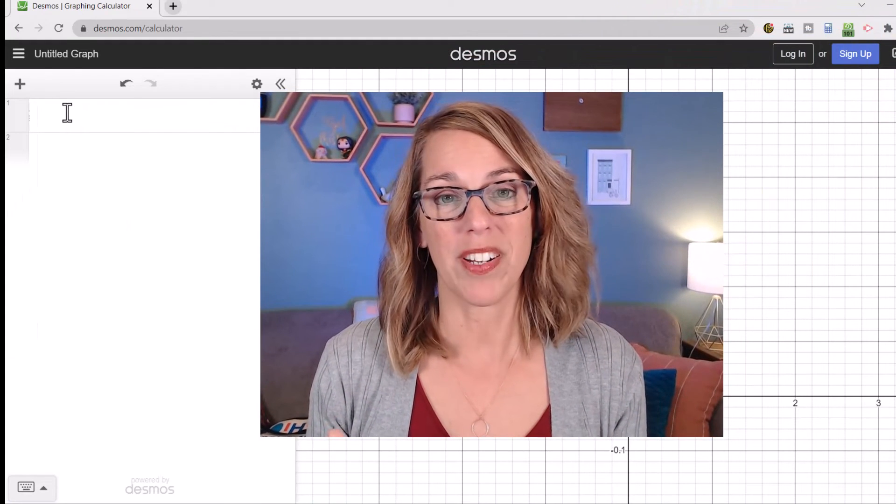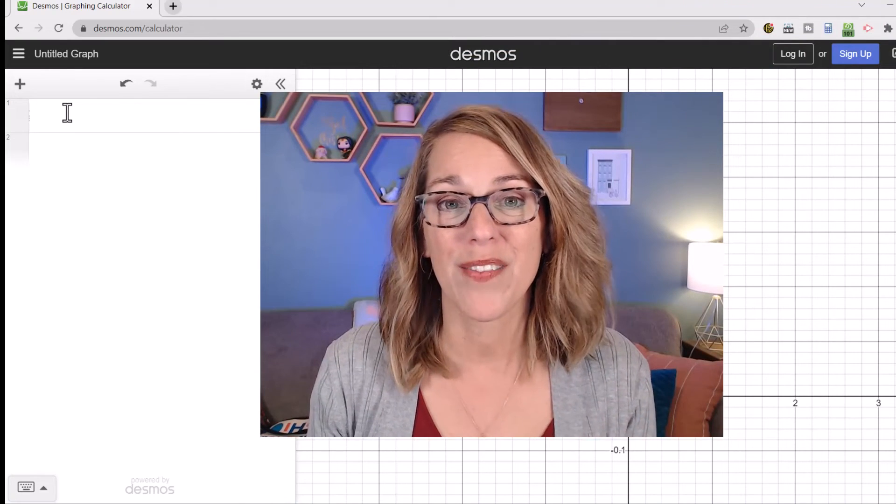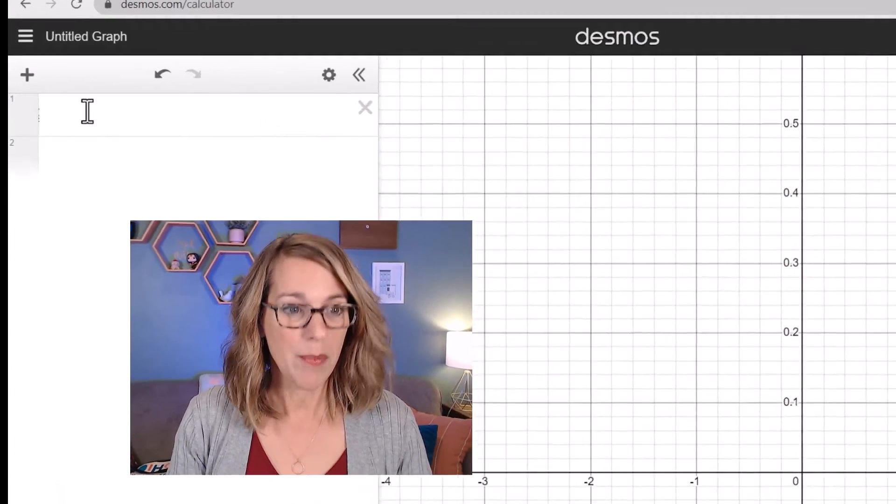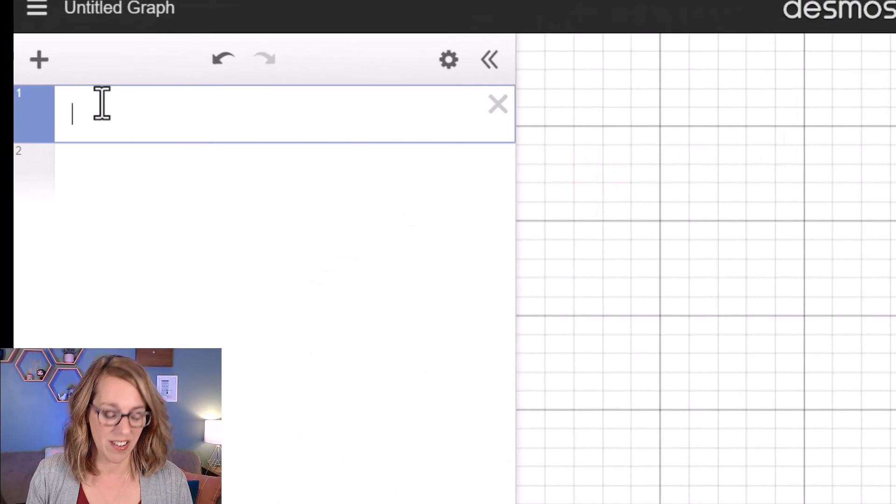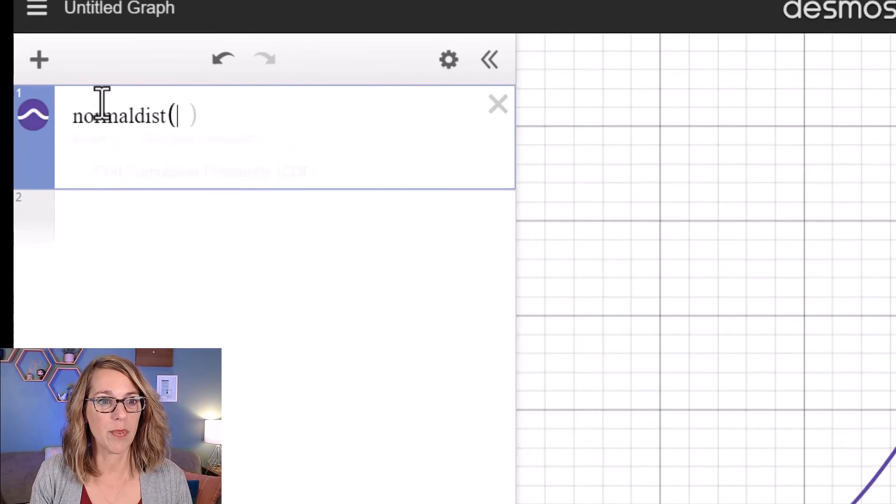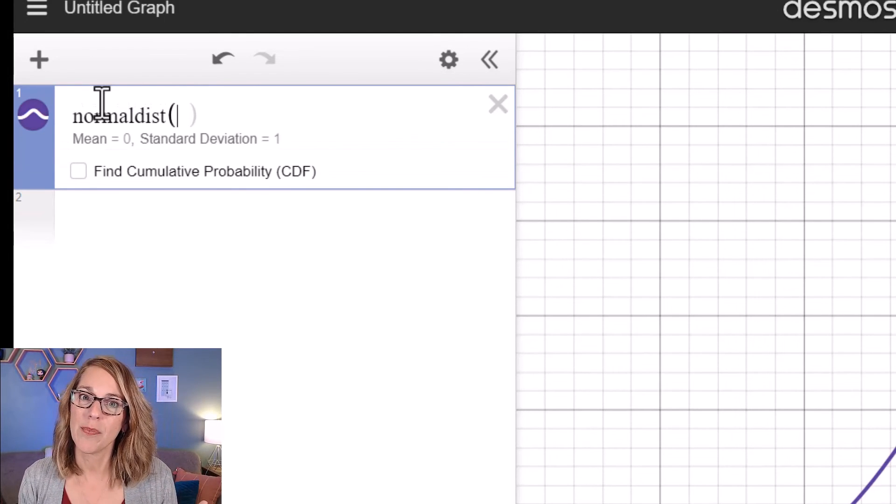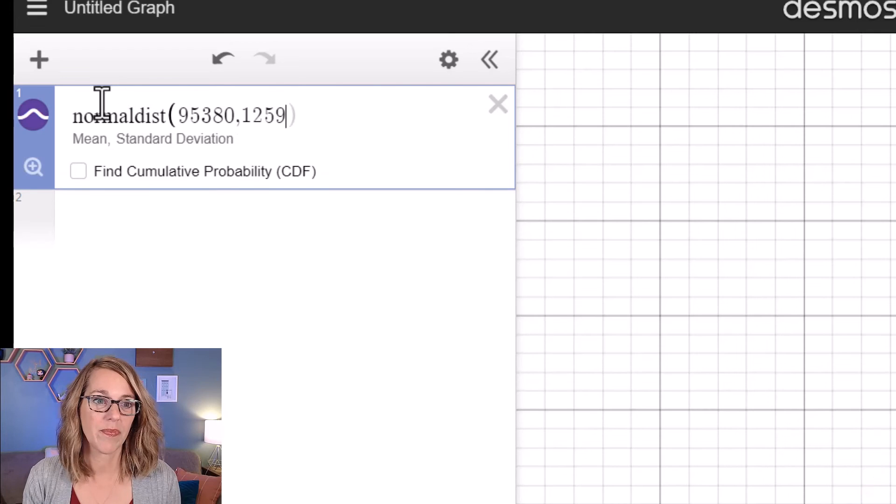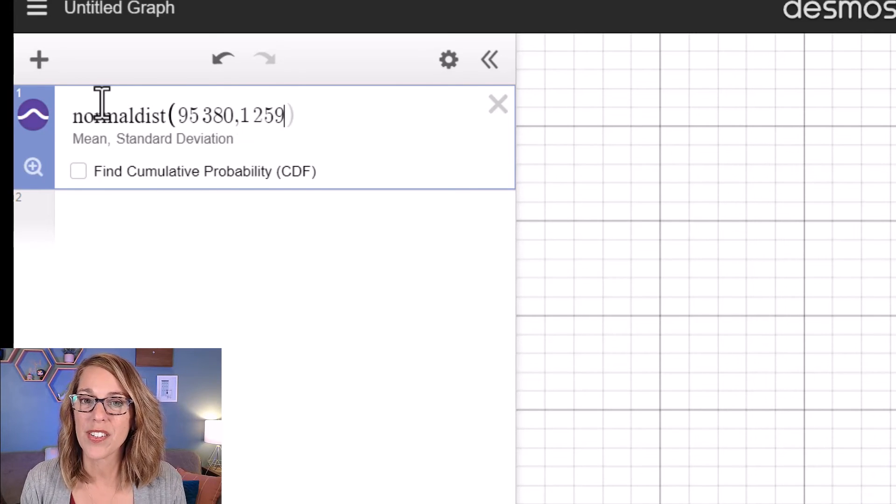I can also work with normally distributed data that is off of the standard normal curve. I'm going to type in normal dist again. So normal dist parenthesis, and let's go ahead and put in a mean salary of $95,380 with a standard deviation of $1,259.